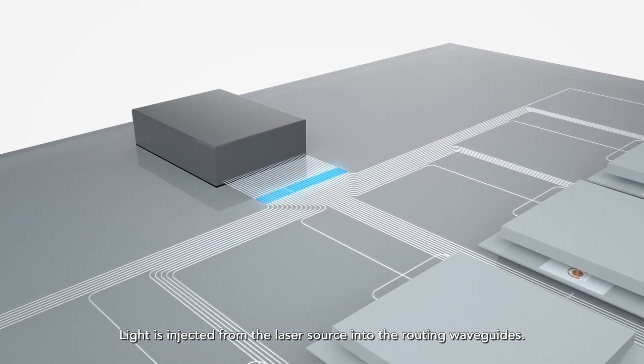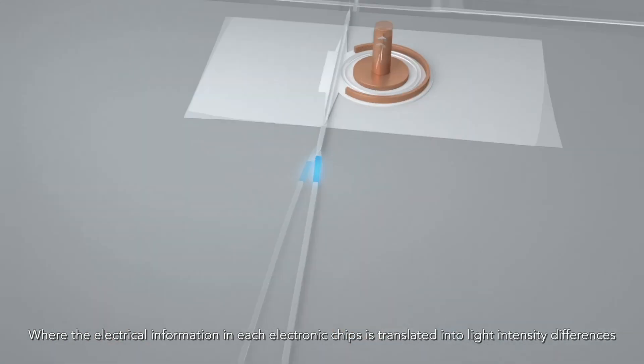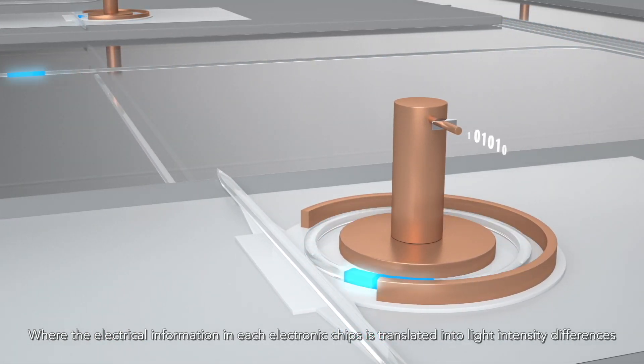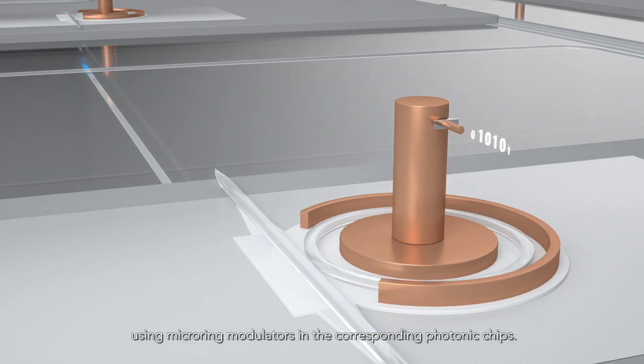Light is injected from the laser source into the routing waveguides where the electrical information in each electronic chip is translated into light intensity differences using micro ring modulators in the corresponding photonic chips.